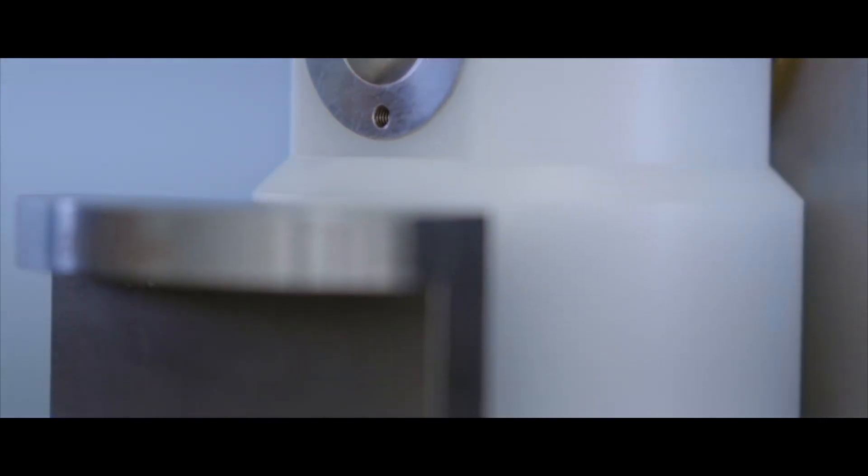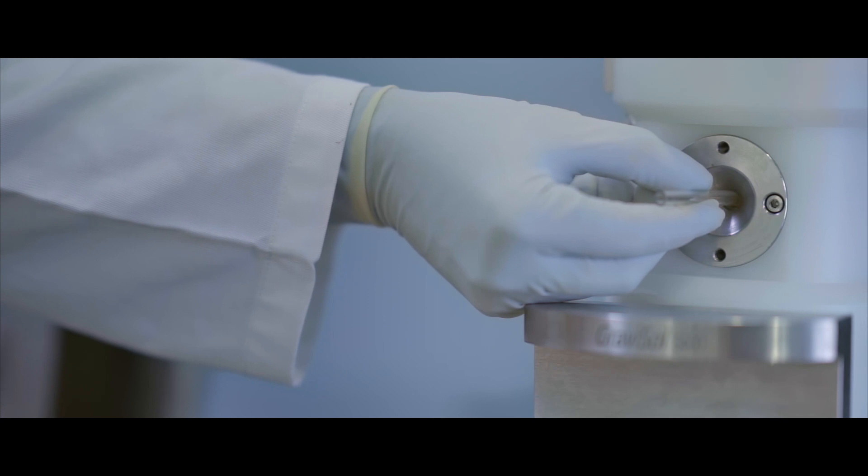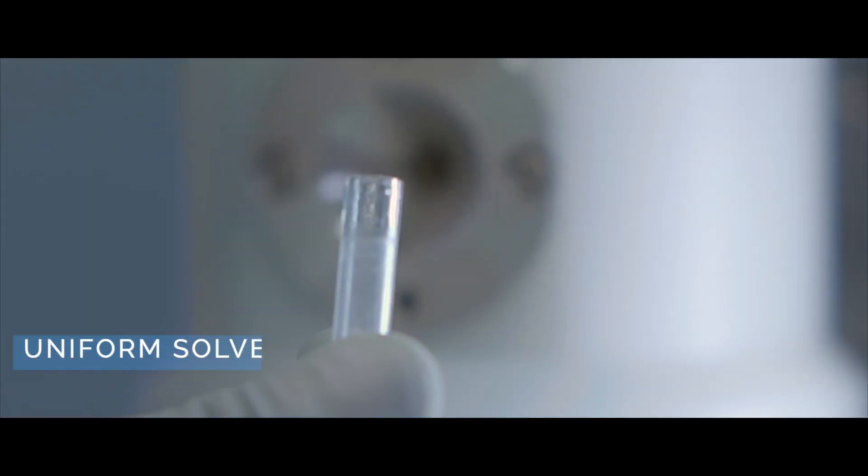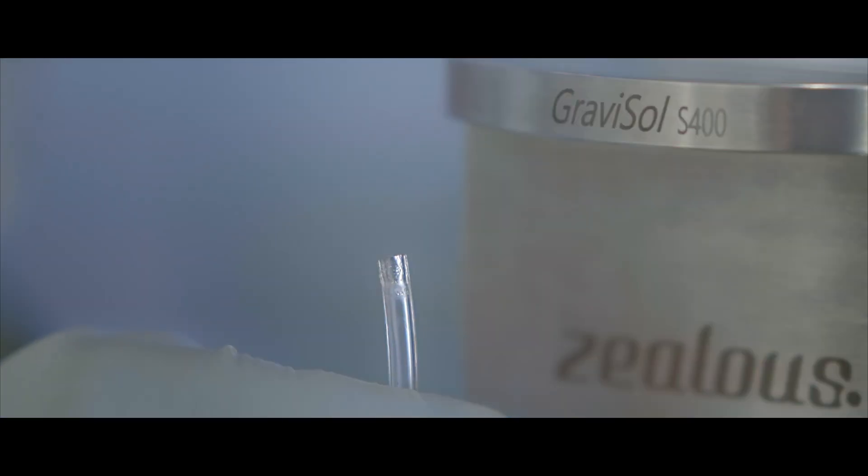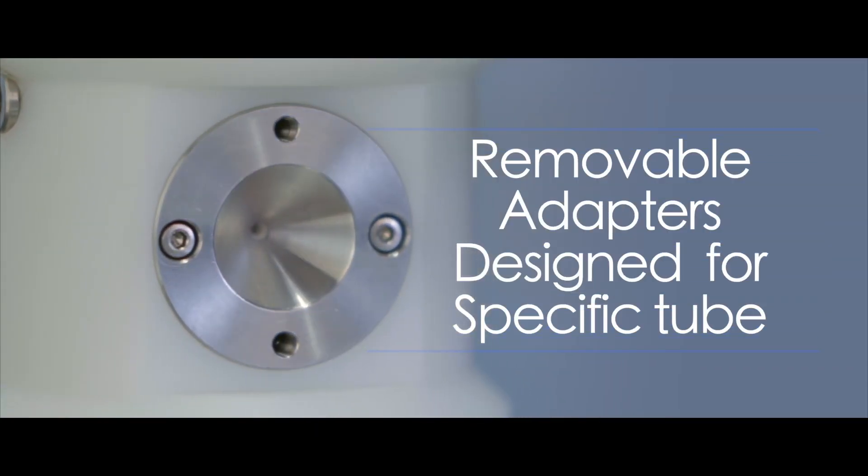Instead of dipping components into dishes of solvent or applying UV cure adhesive by hand, the operator simply inserts the end of the tubing or fitting into the applicator port on the side of the Gravisol system. The correct amount of fluid is automatically applied every time, regardless of who performed the operation.